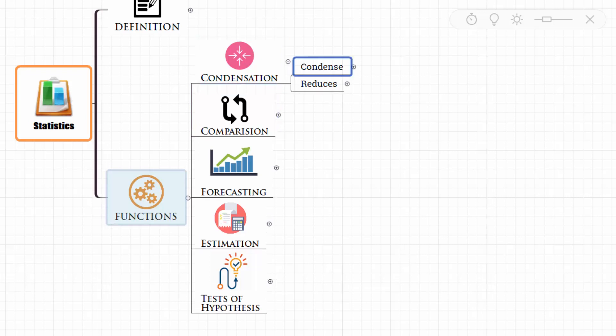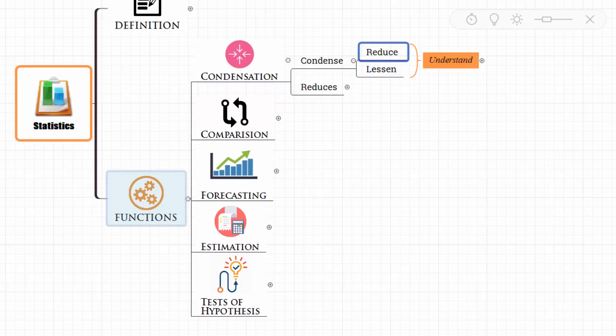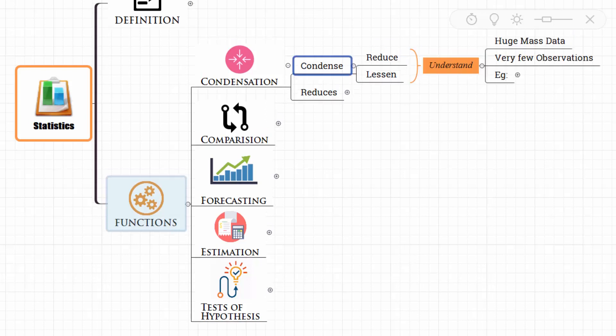What is condensation? In condensation, we reduce or lessen the mass amount of data so that we can understand it with very few observations. When we condense, we are reducing or lessening the data so that we can understand huge mass data with very few observations.